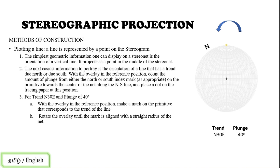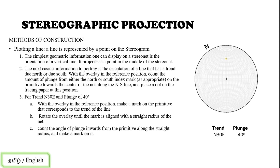Step two: rotate the overlay — the tracing sheet — over the stereographic projection until the marked point aligns with a straight radius of the net. Since my mark is 30° from north toward east, I rotate the tracing sheet to the left until the mark reaches the north point. Step three: count the angle of the plunge inward from the primitive circle along the straight radius and mark that point. The plunge is 40°, so count from the primitive: 0°, 10°, 20°, 30°, 40° — and mark that point.